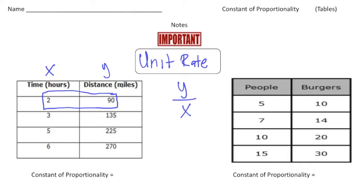In this case we're going to divide 90 by 2, and that reduces down to 45. So the unit rate of this data is 45 — more specifically, 45 miles for every one hour.